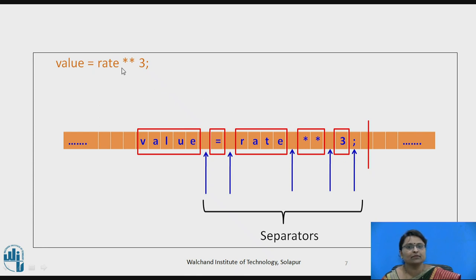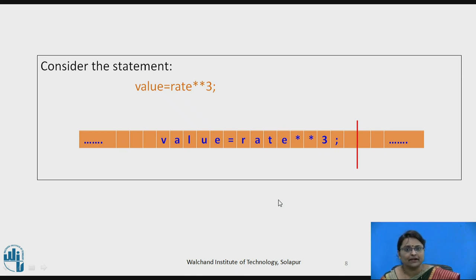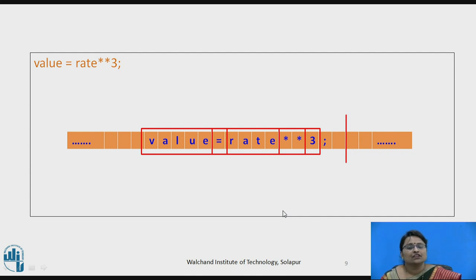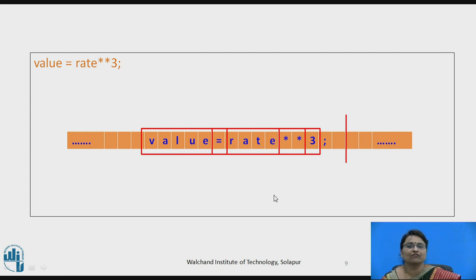Spaces are taken as separators, and semicolons are taken as the end of a line or separator. In a statement without any separators, the contents are stored continuously. Tokens are still generated: for example, 'value' as one token, 'equal to' as the second, 'rate' as the third, the exponentiation operator '**' as the fourth, and '3' as a number for the fifth token.